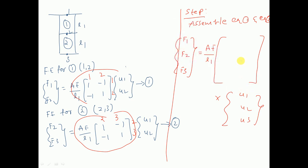Before assembling, we identify the nodes: this is the first node, the second node, and the third node. Then we determine each entry of the global stiffness matrix by looking at what goes in the 1,1 element position.